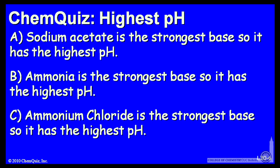Let's look at a possible explanation for each answer. A, sodium acetate is the strongest base, so it has the highest pH. B, ammonia is the strongest base, so it has the highest pH. Or C, ammonium chloride is the strongest base, so it has the highest pH. Think about that for a minute and make a selection.